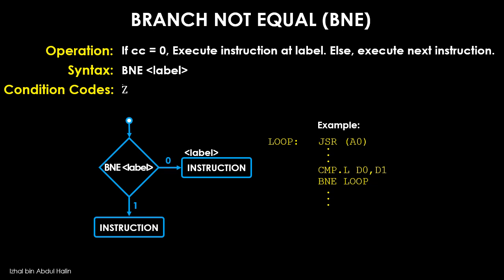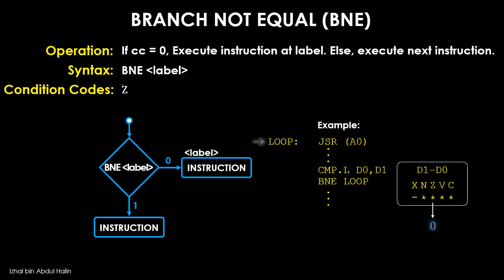Notice how a compare instruction is placed before the BNE instruction. When CMP.L D0, D1 is executed, the data values in D0 and D1 are compared: the destination is subtracted by the source operand and the result is not saved in the destination, however the status register is affected. The BNE instruction is executed next; it checks the Z flag value. If it is zero, then the instruction JSR A0 attached to label 'loop' is executed; if not, the instructions following the BGT instruction are executed next.